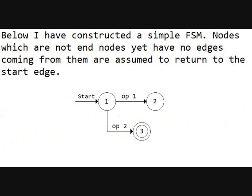I have constructed a simple finite state machine. Those which are not end nodes yet have no edges coming from them are assumed to return to the start edge. You can see there you have the start edge — it goes to state 1. There's option 1 or option 2. Option 2 leads to state 3, which is the end state, which would terminate the machine. Option 1 leads to state 2, which would execute whatever goes on in that state, and then go back to the start edge. There's no arrow pointing there, but you can just imagine it being there — drawing it would just make the graph unnecessarily cluttered.